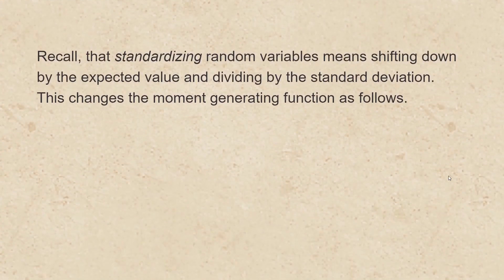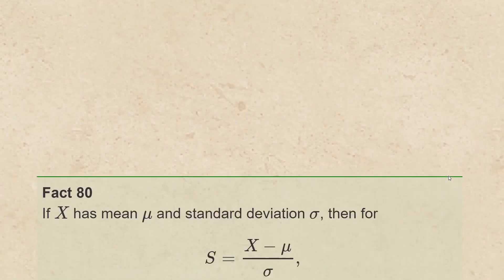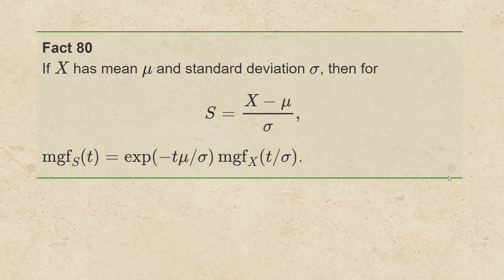Recall that standardizing random variables means shifting down by the expected value and dividing by the standard deviation. This changes the moment generating function as follows. If x has mean mu and standard deviation sigma, then for s equal to x minus mu all divided by sigma, the moment generating function of s is the exponential function applied to negative t mu over sigma times the moment generating function of x evaluated at t over sigma.